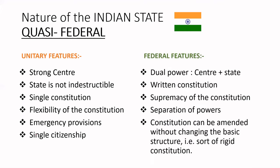The federal features of India include: dual power — divided between the center and the state government; a written constitution; supremacy of the constitution, which holds the most important power in the country; and a clear demarcation and separation of powers. Though changes can be made in the constitution, the basic structure of the constitution cannot be changed — meaning our constitution also holds the features of being a rigid constitution.